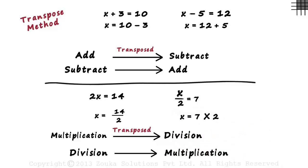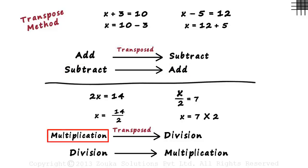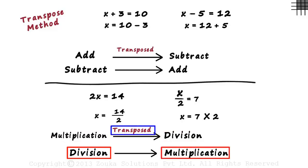So remember these four rules: if a term is added, it is subtracted when transposed. If subtracted, it is added when transposed. If multiplied on one side, it is divided when transposed. And if divided on one side, it is multiplied when transposed.